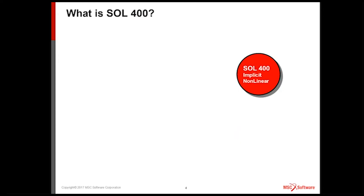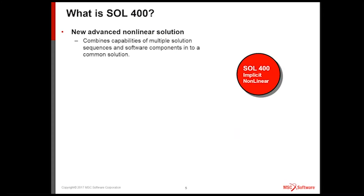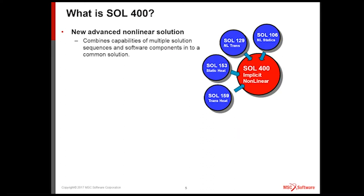Very briefly, what is Solution 400? Solution 400 is our multidiscipline nonlinear solution. We've combined a number of solution sequences into it. It started out with the traditional nonlinear solutions 106, 129. We brought in the heat transfer, 153 and 159. We brought in the linear solutions. That's important because in Solution 400 you can actually run individual subcases with linear analysis.